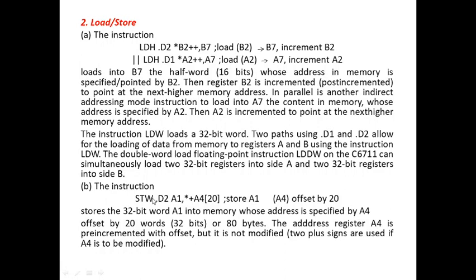Similarly, the instruction STW stores data: STW.D2, the functional unit used is D2, with operands A1 comma plus A4 of 20. Initially A4 is pre-incremented by 20, and that incremented value is used to store the 32-bit contents of A1 into the new memory location. This stores the 32-bit word A1 into the memory address specified by A4 offset by 20 words. The address register A4 is pre-incremented with the offset but is not itself modified.